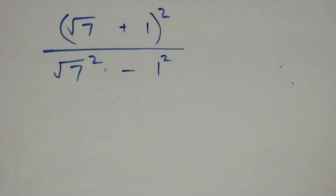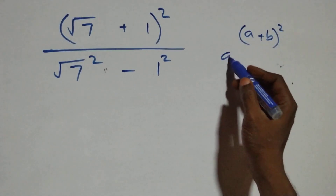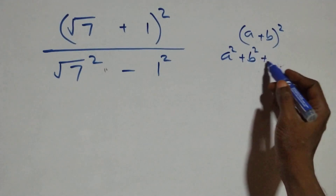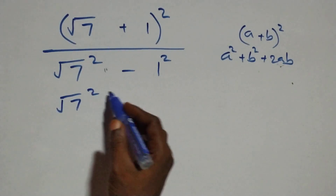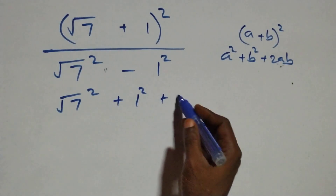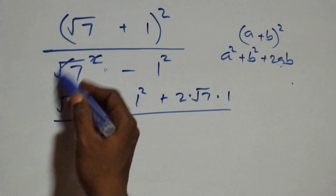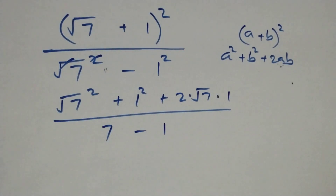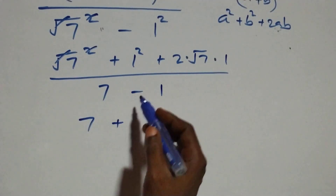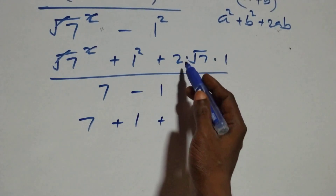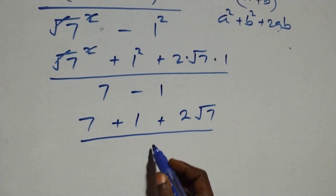Expanding the numerator using (a plus b) squared equals a squared plus b squared plus two ab, we get root seven squared plus one squared plus two times root seven times one. The denominator: square cancels square root giving seven, minus one squared which is one, so the denominator is seven minus one, which is six.